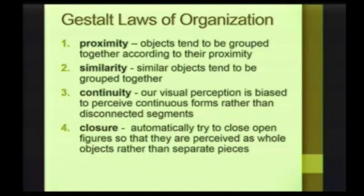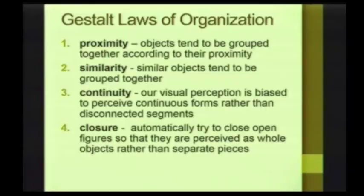Let's go through each law quickly. First, there's proximity: objects tend to be grouped together according to their proximity — the closer things are to each other, the more likely we are to group them together. Similarity: similar objects tend to be grouped together; if a group of objects is similar, we're more likely to see it as one unit. Continuity: our visual perception is biased to perceive continuous forms rather than disconnected segments — and I think you're going to be surprised at how automatically we do this.